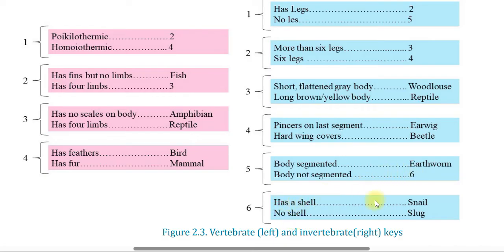A sail or shell leads to key 9. Bodies that are not segmented with a coiling shell are molluscs.